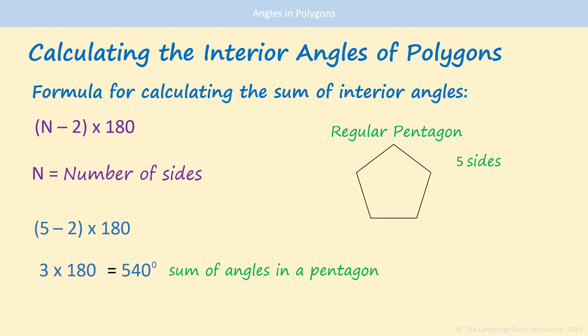Remember that gives you the sum of all the angles in there. To work out what one angle is, because this is regular, they'll all be the same. So you would divide that 540 by the number of sides.